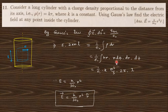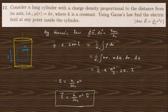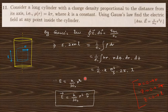The limits of integration are: r from 0 to r, φ from 0 to 2π, and z from 0 to L. Putting in these limits and integrating, you get the final expression and the answer.